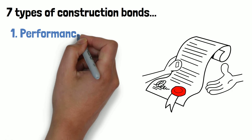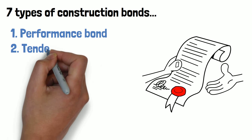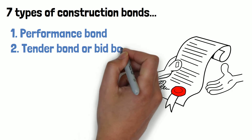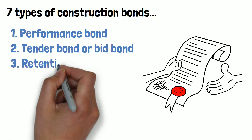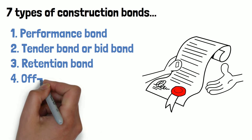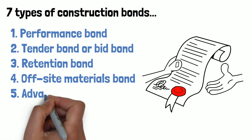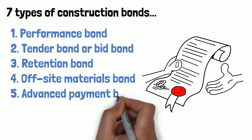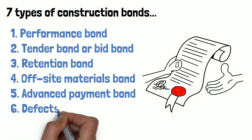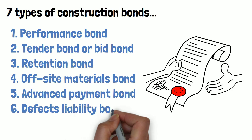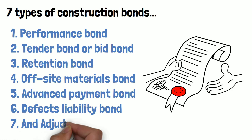The seven types are: performance bond, tender bond or bid bond, retention bond, off-site materials bond, advanced payment bond, defects liability bond, and adjudication bond.